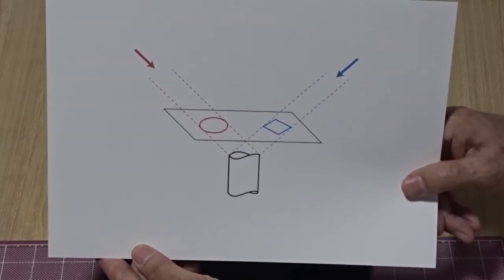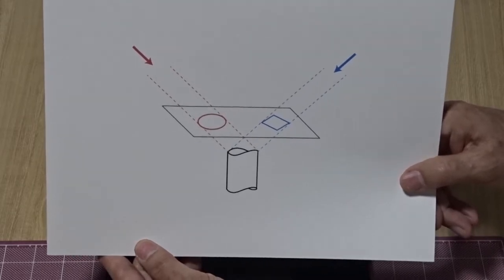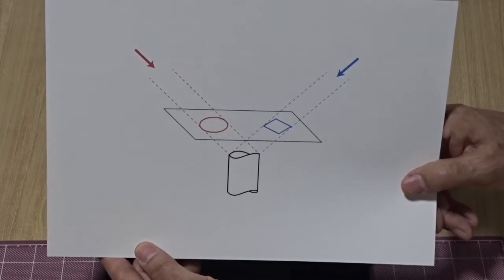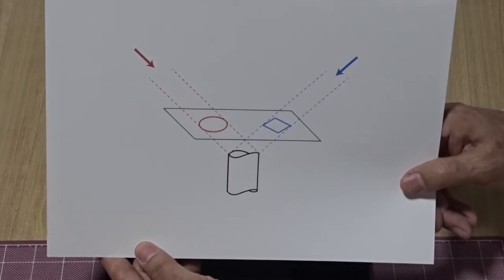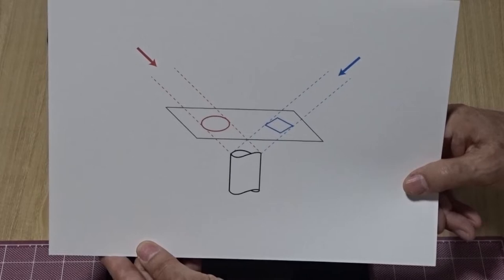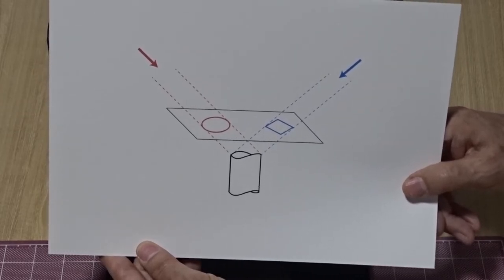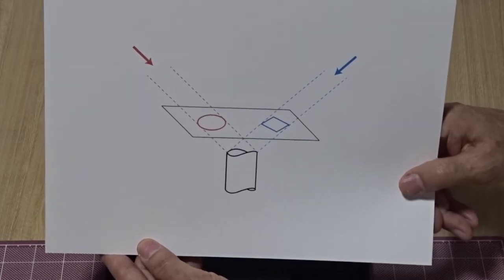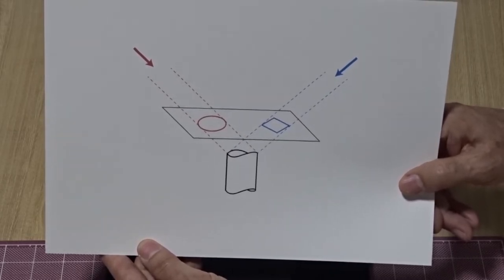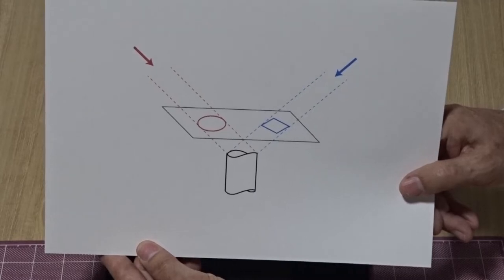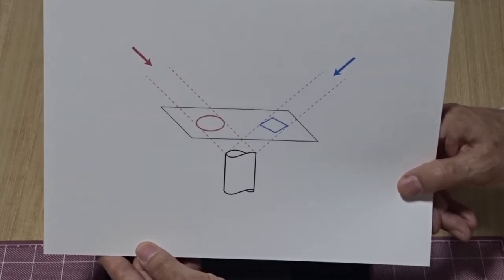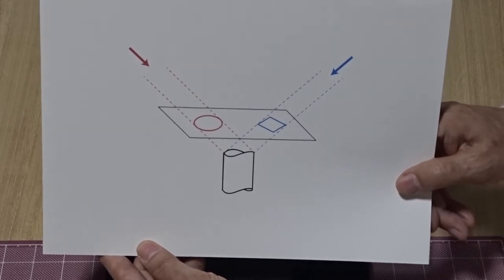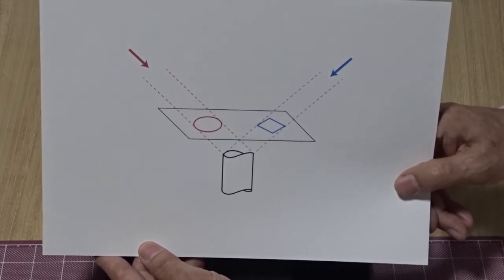Then we get the space curve, that is the top curve of the cylinder. Once we get the space curve, then we translate it in a vertical direction and collect all the points which are swept by this space curve. Then we get the cylinder shape object. That is the way to construct this object.